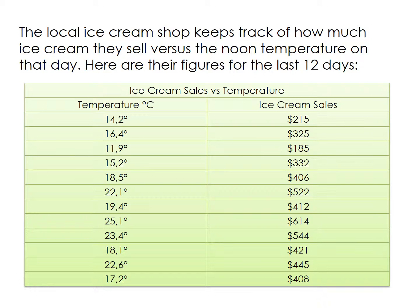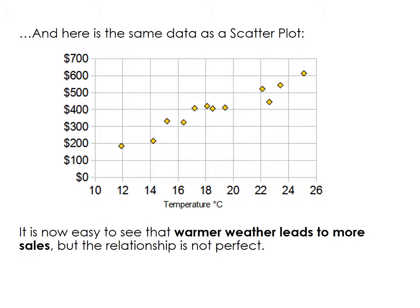Here is an easy example of a scatter plot. Take an ice cream shop which keeps track of how much ice cream they sell versus the noon temperature on that day. Here are figures from 12 days, showing temperature and ice cream sales. This is how it looks when you transfer the data to a scatter plot. We can clearly see that warmer weather leads to more sales, but the relationship is not perfect since the data points do not all fall on one line.